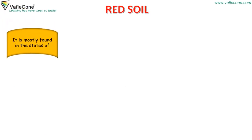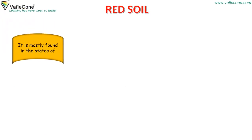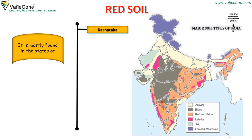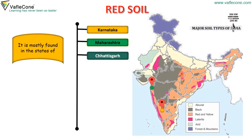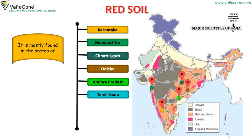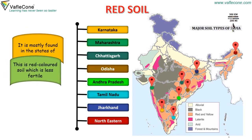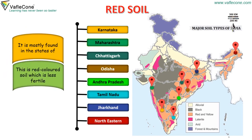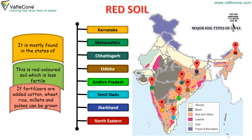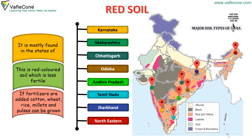Red soil is mostly found in the states of Karnataka, Maharashtra, Chhattisgarh, Odisha, Andhra Pradesh, Tamil Nadu, Jharkhand and Northeastern states. This red colored soil is less fertile. However, if fertilizers are added, cotton, wheat, rice, millets and pulses can be grown.